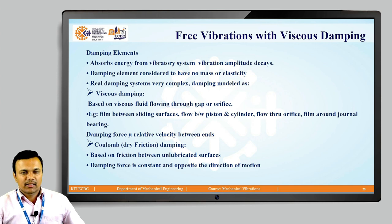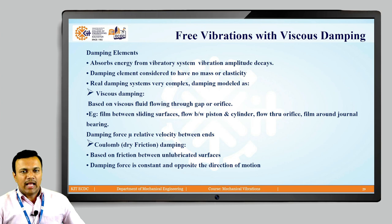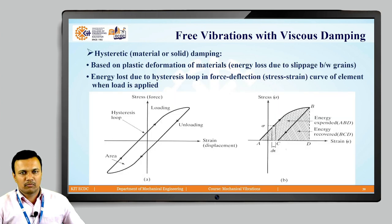The second type of damping is coulomb or dry friction damping. It is based on the friction between unlubricated surfaces, and the damping force is constant and always opposite to the direction of motion.